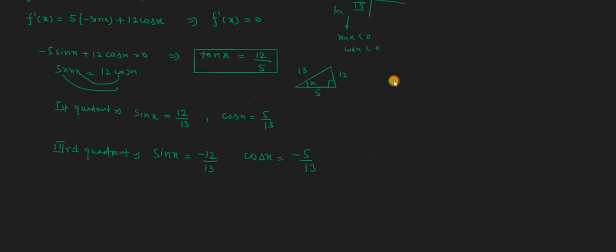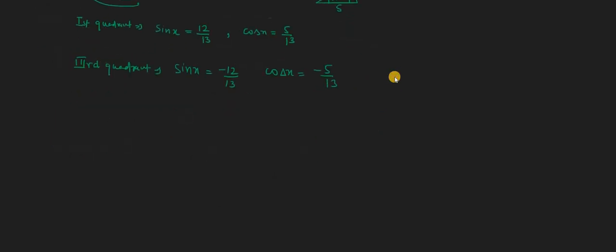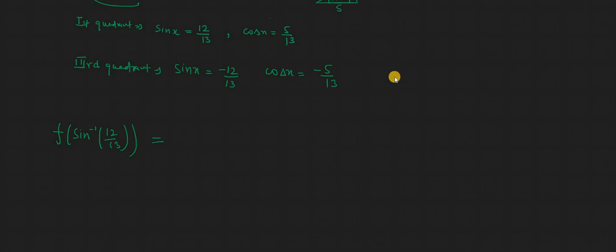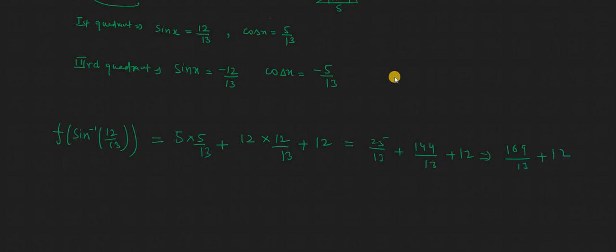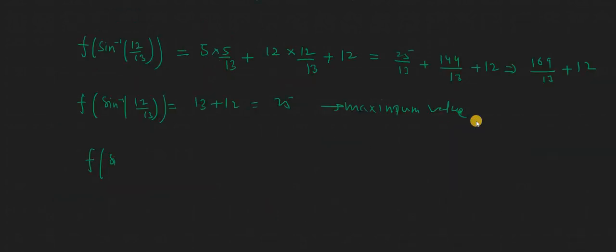Now we substitute these critical values into the function. When x = sin⁻¹(12/13) — i.e., first quadrant — we get: 5×(5/13) + 12×(12/13) + 12 = 25/13 + 144/13 + 12 = 169/13 + 12 = 13 + 12 = 25. This is the maximum value.